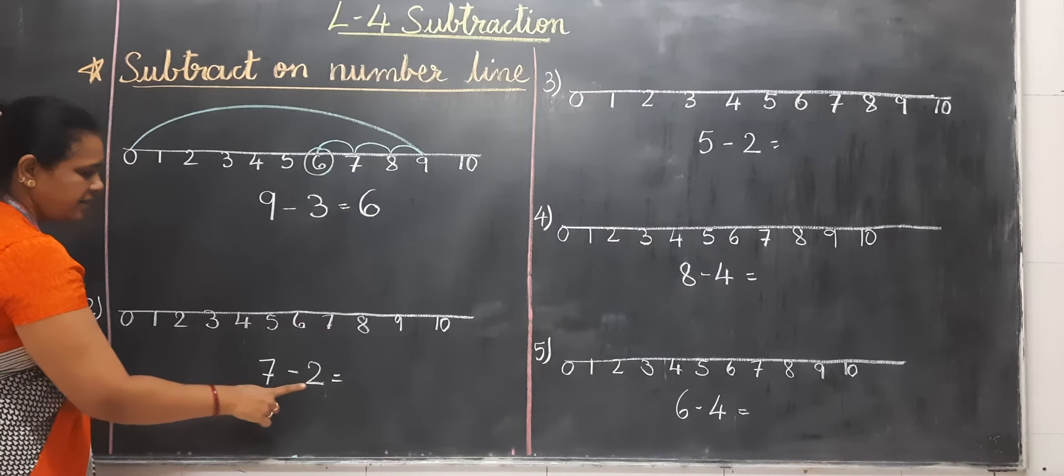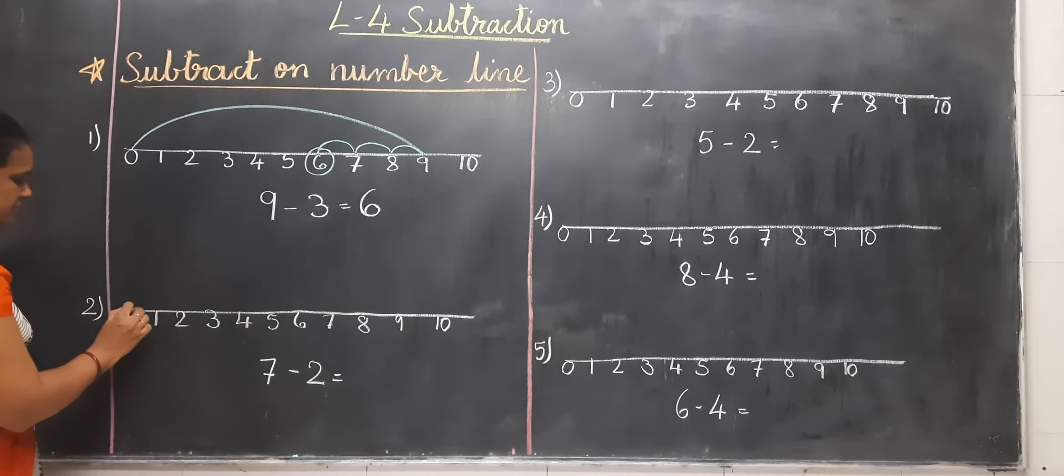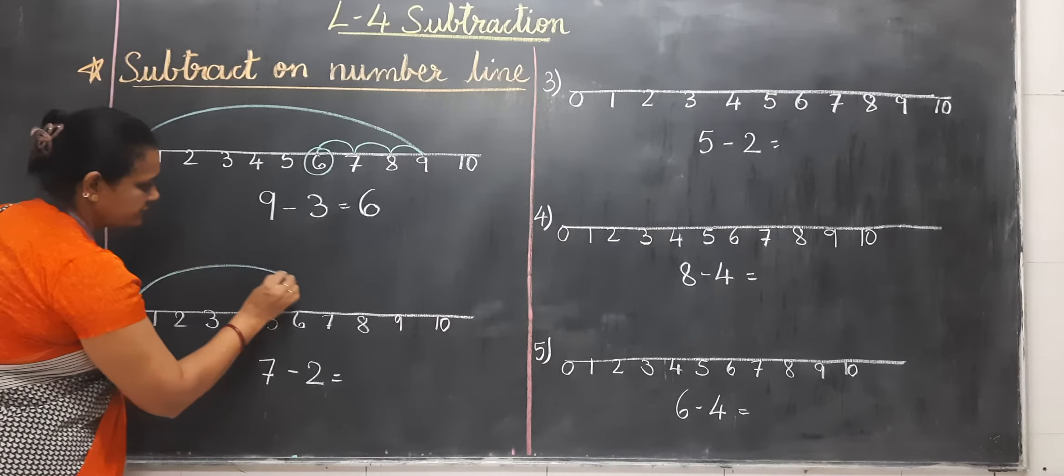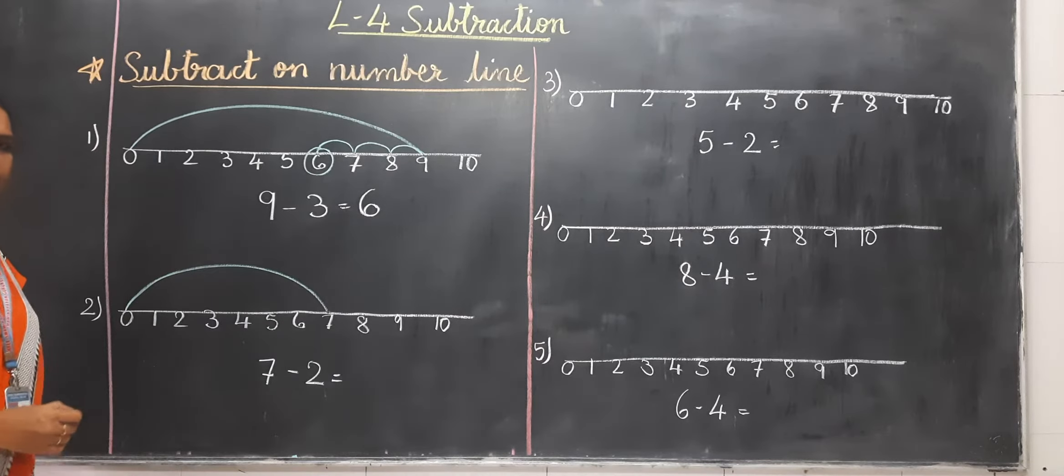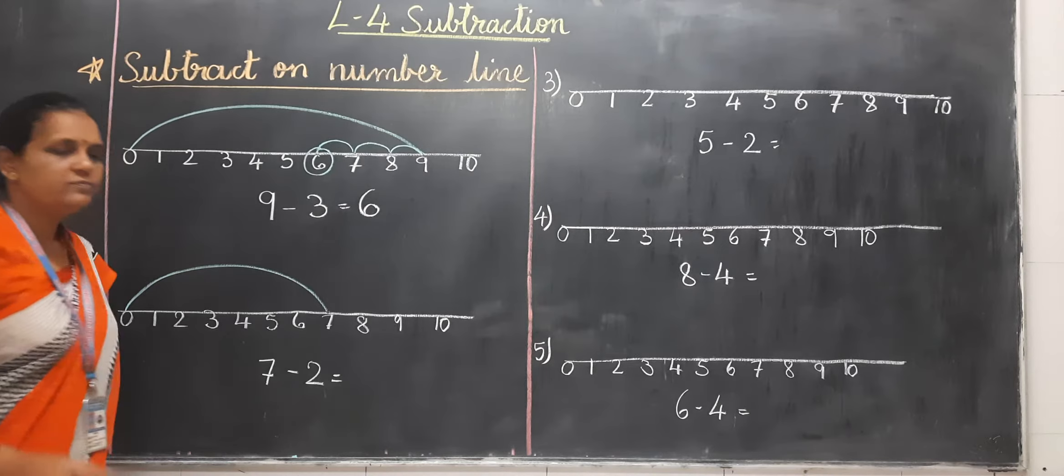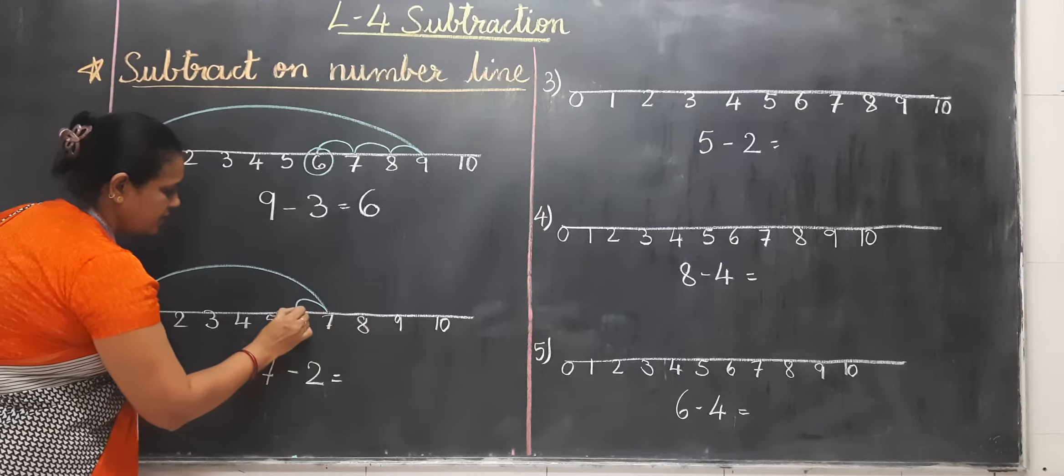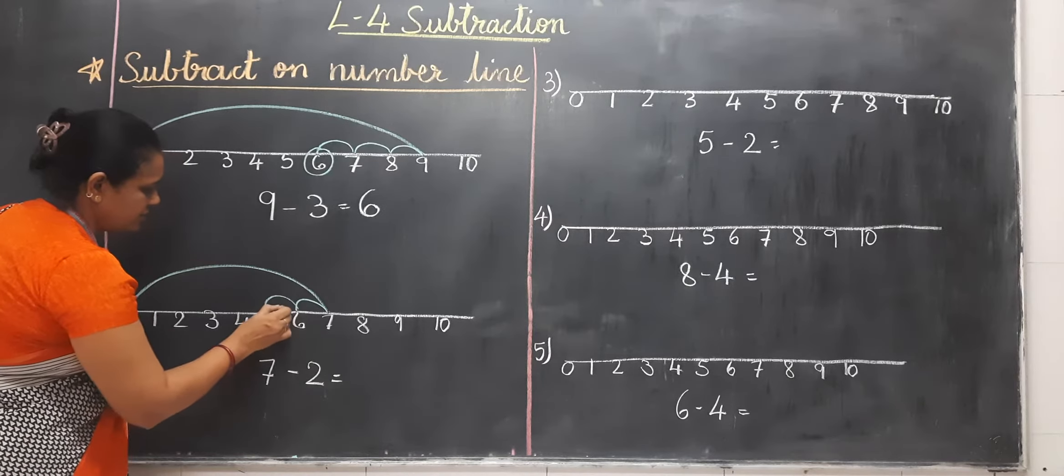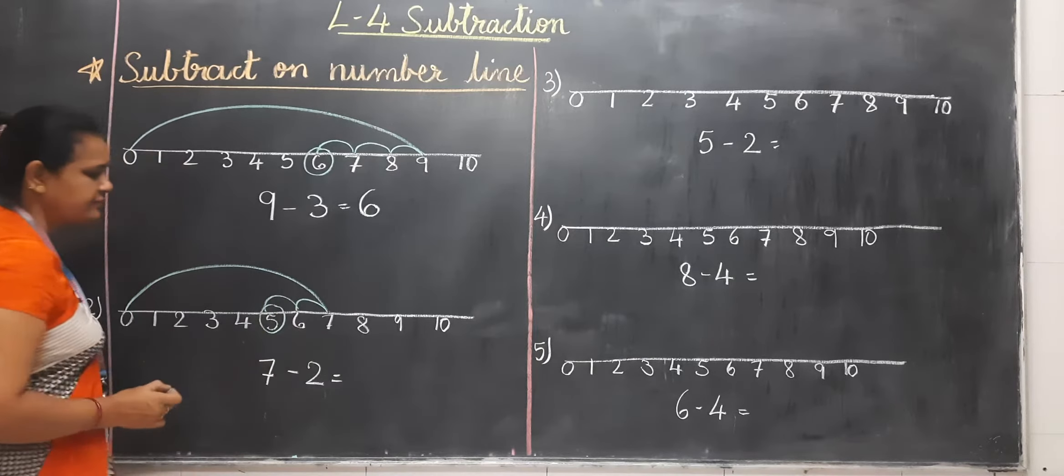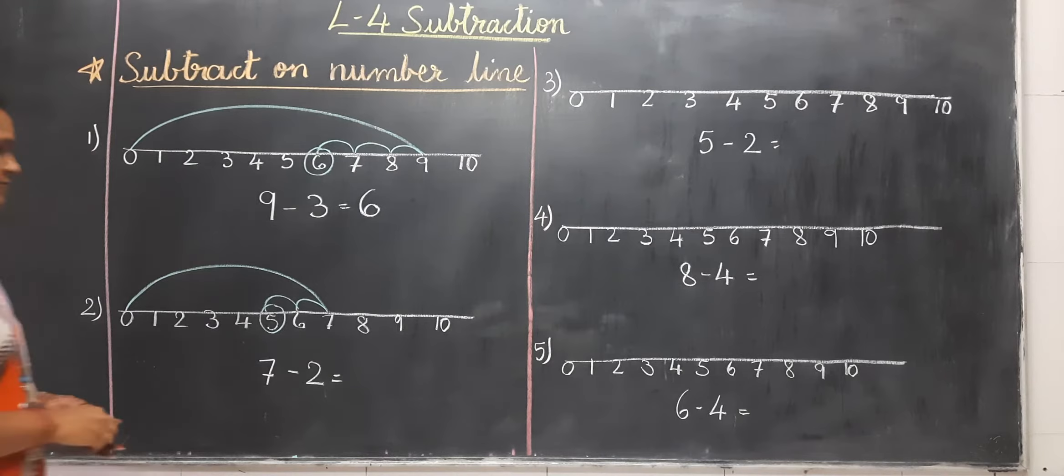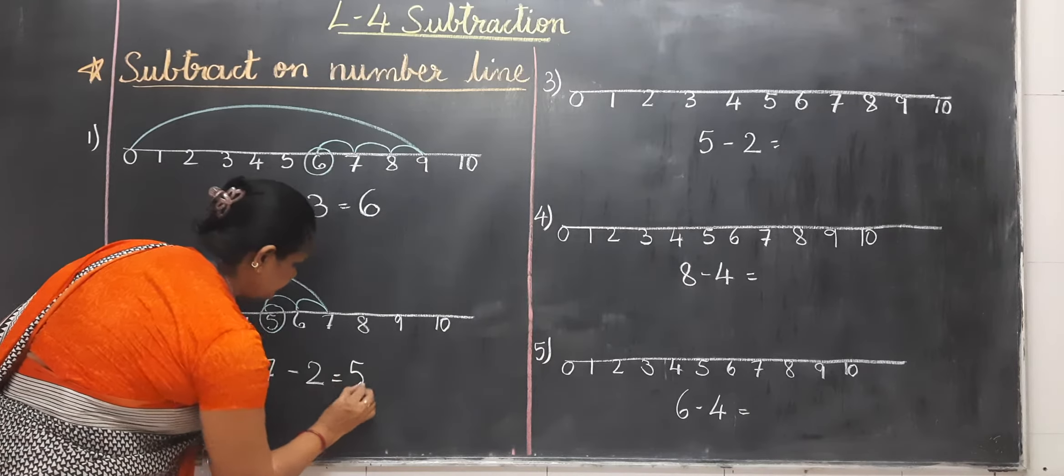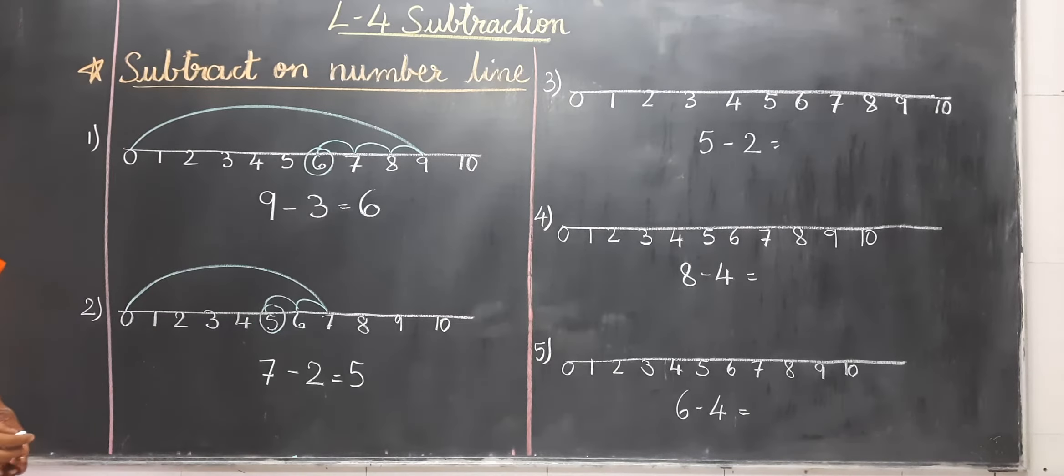Now, 7 minus 2. From 0 we have to put 7, and minus 2 means we have to put 1 and 2. Now, what is your answer? Your answer is 5. Understand how to do it?